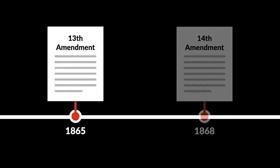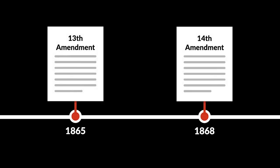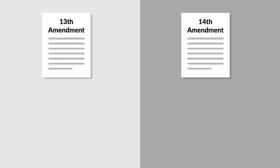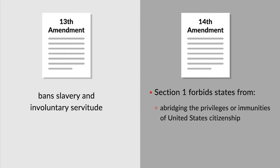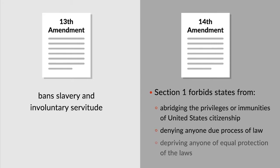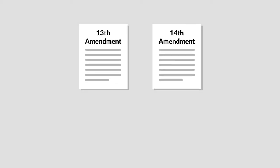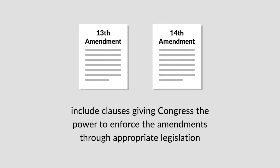The 13th and 14th Amendments were ratified in 1865 and 1868, respectively, in the wake of the Civil War. The 13th Amendment banned slavery and involuntary servitude. Section 1 of the 14th Amendment forbade the states from abridging the privileges or immunities of United States citizenship, denying anyone due process of law, or depriving anyone of the equal protection of the laws. Both the 13th and 14th Amendments included clauses giving Congress the power to enforce the amendments through appropriate legislation.